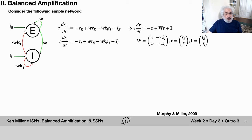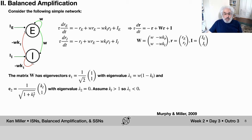We assume a linear network - think of it as linearized around a fixed point - describing the dynamics close to that fixed point when we added the surround input. We can write this as a vector and matrix equation where the connectivity matrix has the E-to-E connection, E-to-I, and I-to-I. The rate vector is the E and I firing rates, and the input is the E and I inputs. The matrix W has two eigenvectors: one proportional to (1,1) with eigenvalue lambda-1, and the other proportional to (kappa, -1) with eigenvalue zero. We assume kappa is greater than one, so lambda-1 is less than zero - the inhibition is stronger than the excitation.